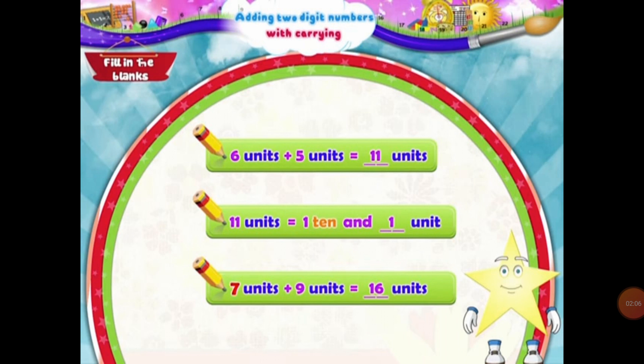Let's have a look at another example: 7 units plus 9 units. So students, when we add 7 units and 9 units, they will be equal to 16 units. And what will be the place value of 16? In 16, we have one 10 and six units.